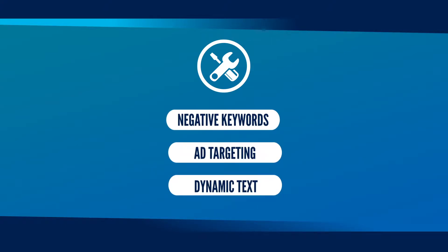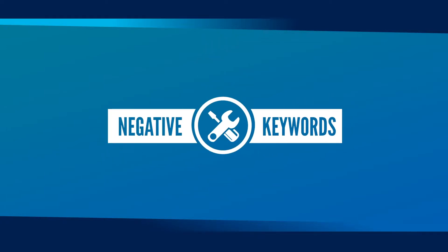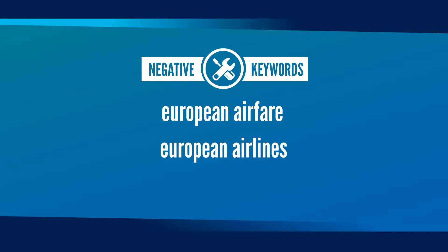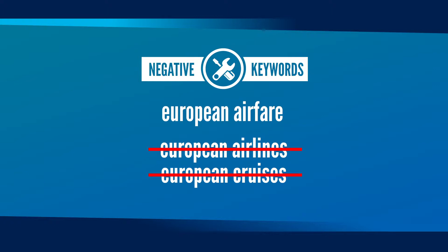Let's take a quick look at each one. Negative keywords prevent your ads from displaying for search queries that contain your keywords but are not relevant to your ad. For example, in the Summer Airfare campaign, we bid on the broad match keyword European airfare, which means your ad could display for related queries like European Airlines and European Cruises. To make sure the ad doesn't display for related searches like this, we can add the terms as negative keywords.